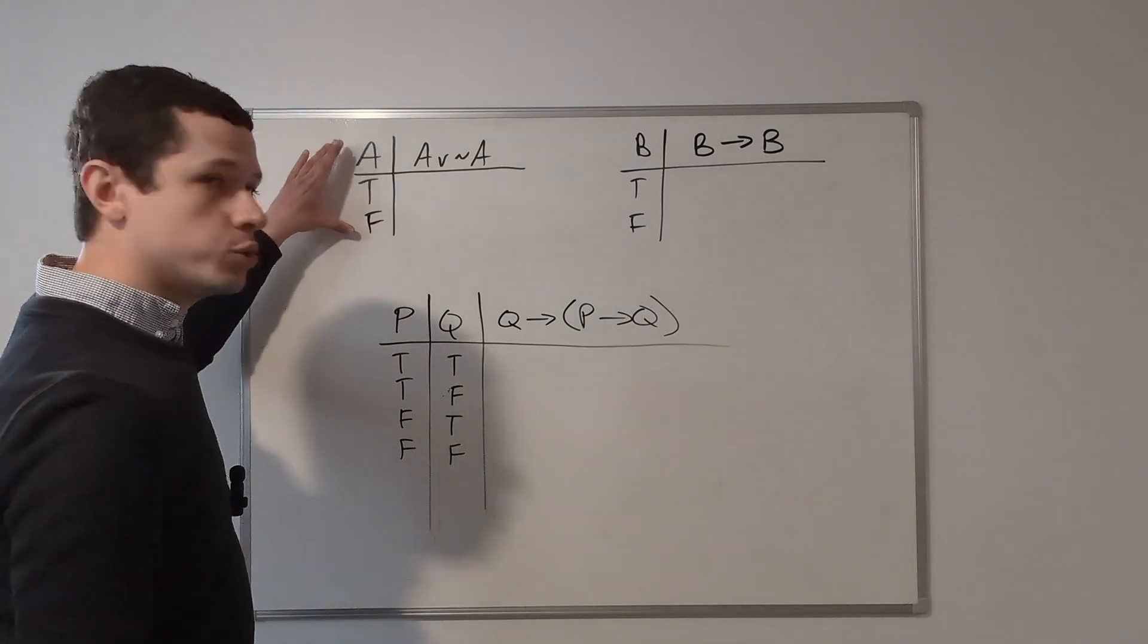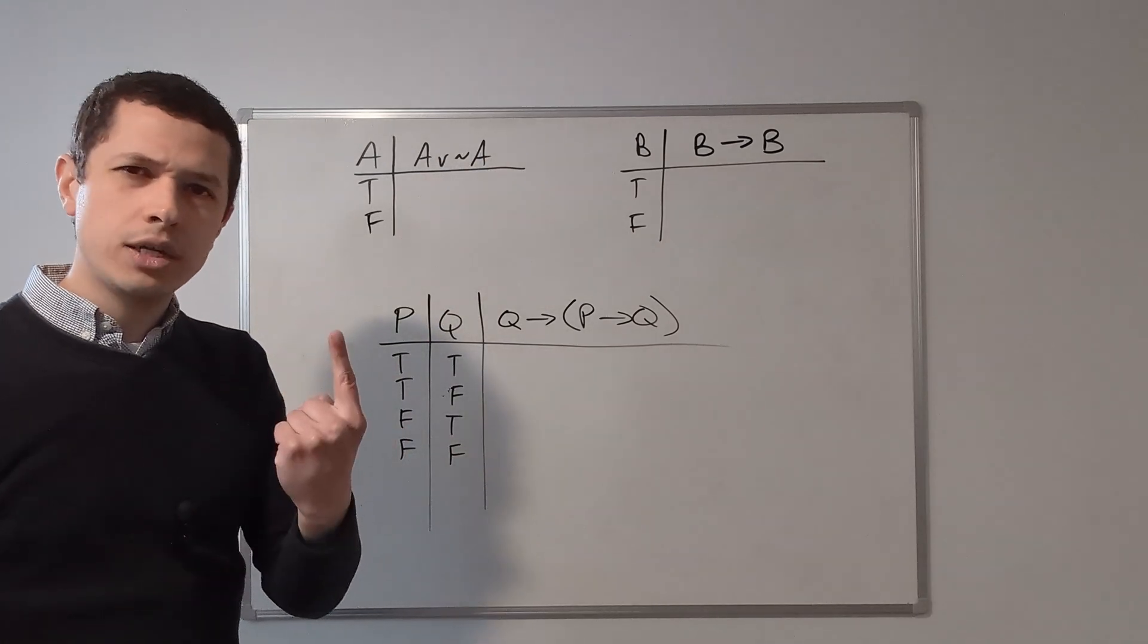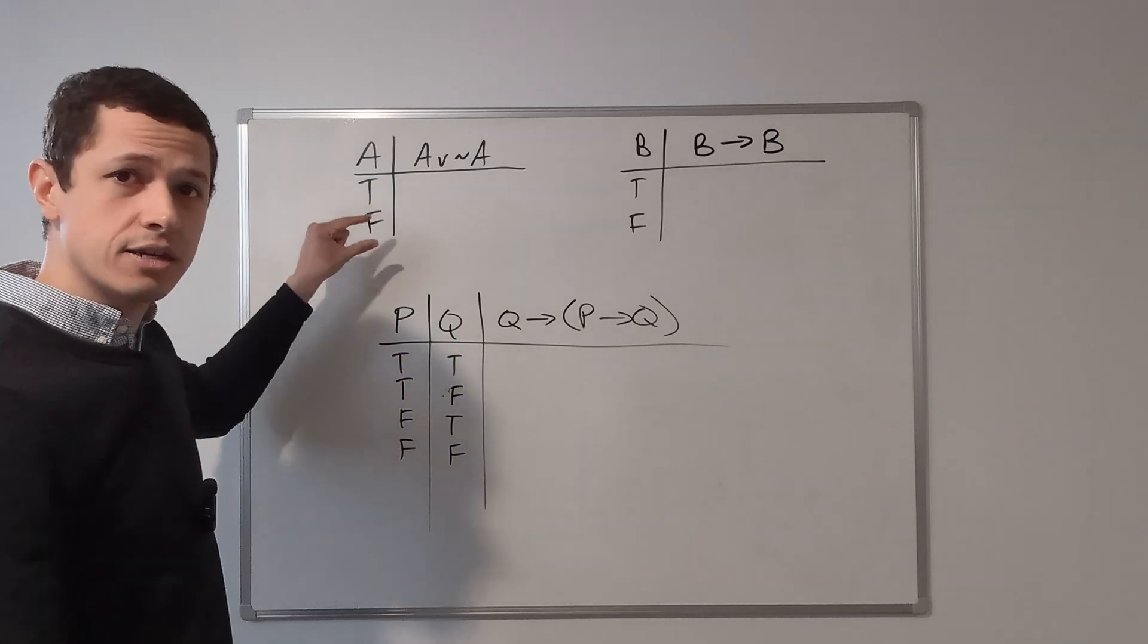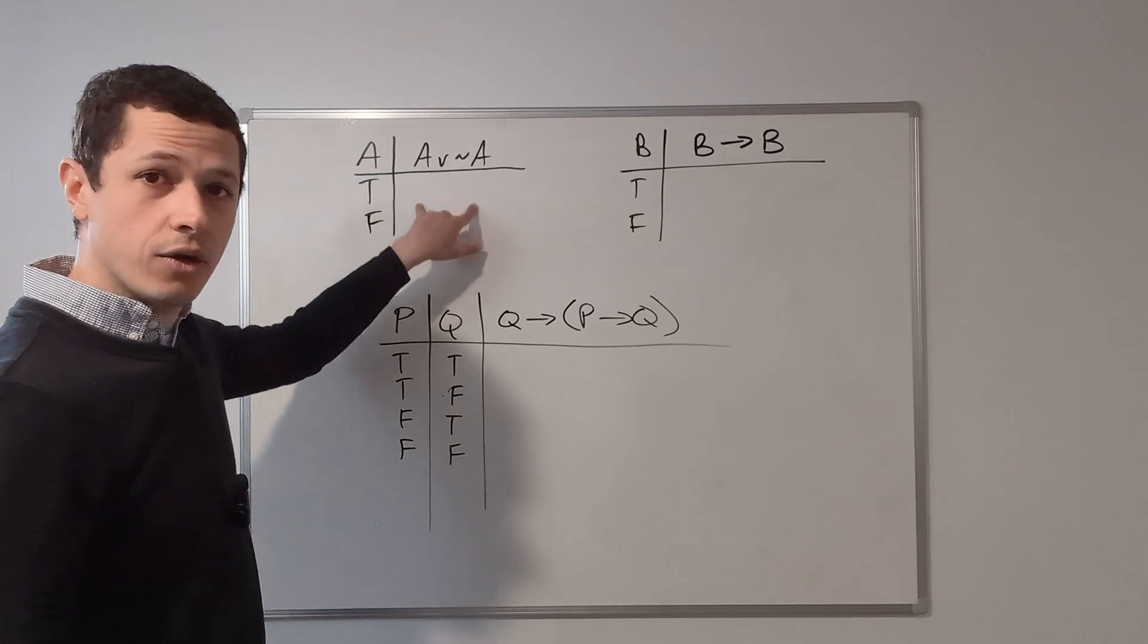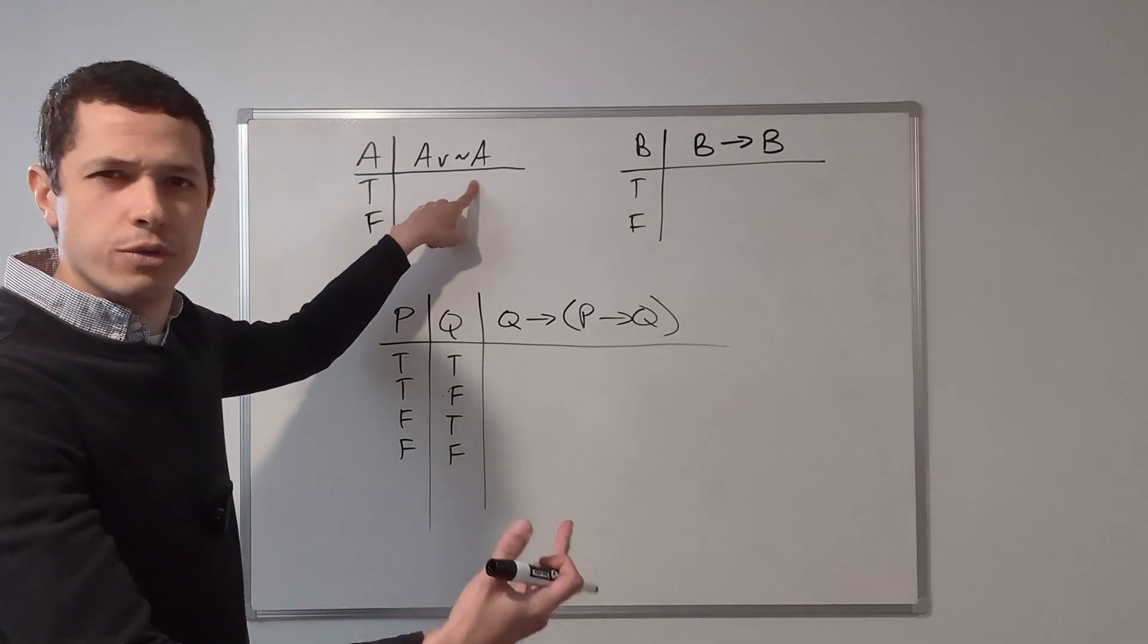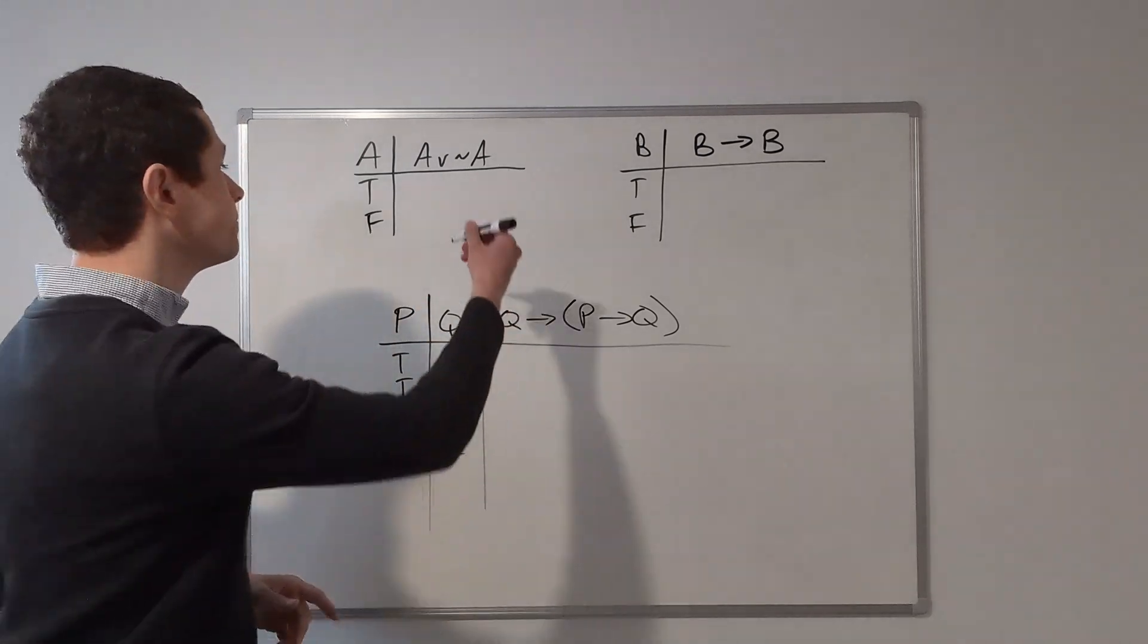So here in our really small truth table, we have A or not A. We're dealing with just one atomic statement. So we'll have just two rows because that's every single possible truth value that A could have. So it's either true or it's false. Now let's go ahead and calculate this. I'm going to start off by calculating not A. I know it's really simple and I could just skip this step, but it's best to just be thorough.